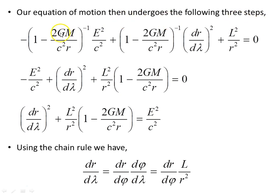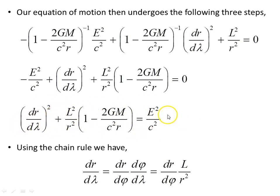Our equation of motion undergoes the following steps. We substitute in the Killing vector relationships: dT/dλ from the energy expression, and dφ/dλ from the angular momentum expression. The next step is to multiply through by the parenthetical term, which gives us the intermediate expression. Rearranging — putting the energy term on the right-hand side — gives us our equation of motion. Using the chain rule, dR/dλ = (dR/dφ)(dφ/dλ), because we want an equation of motion in terms of φ and R. We found dφ/dλ = L/R² from the angular momentum Killing vector.